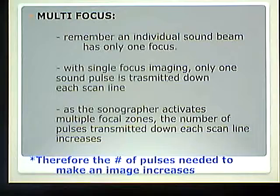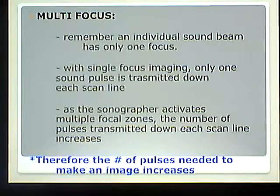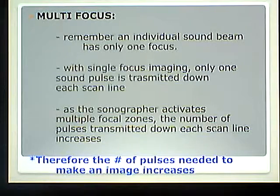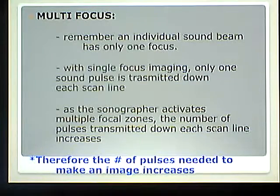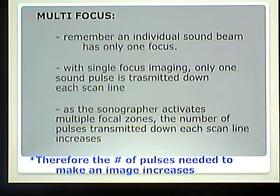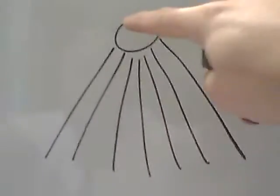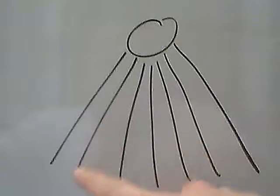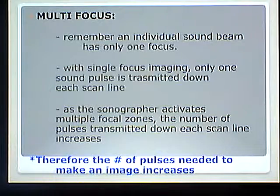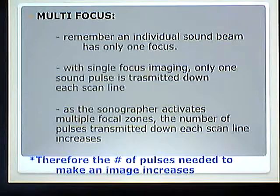Let's talk about the number of pulses per scan line. With a single focus, we have one pulse per scan line. An individual sound beam has only one focus. With single focus imaging, only one sound pulse is transmitted down each scan line. This is my one pulse for every scan line.